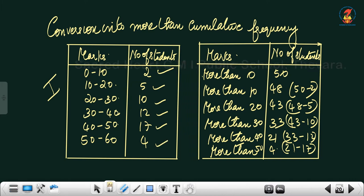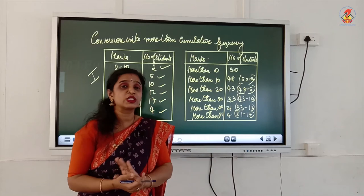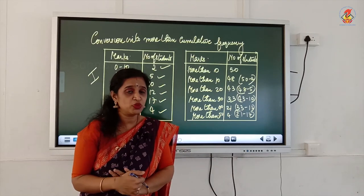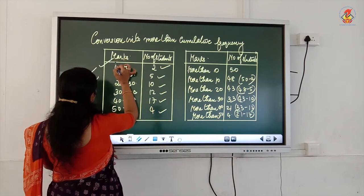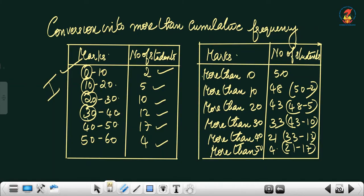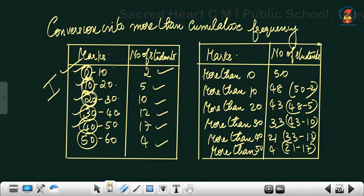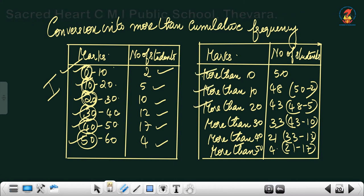For more than cumulative frequency distribution, instead of upper limits, take the lower limits of each class interval: 0, 10, 20, 30, 40, and 50. Write these as 'more than 0,' 'more than 10,' 'more than 20,' 'more than 30,' 'more than 40,' and 'more than 50.' Then subtract each frequency from the cumulative total.